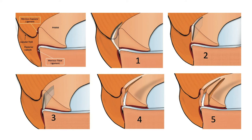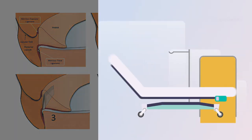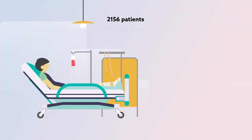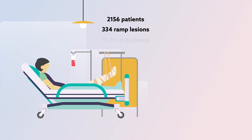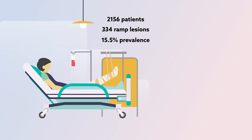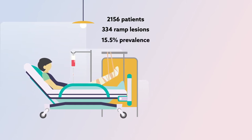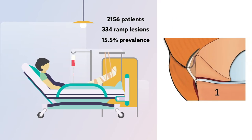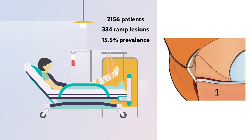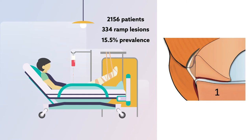Patients' demographic and clinical characteristics were then evaluated to determine whether they were correlated with a particular lesion subtype. Among the 2,156 patients evaluated, 334 ramp lesions were observed, resulting in a prevalence of 15.5%. By far the most common ramp lesion subtype was a complete tear in the meniscocapsular junction, representing almost 50% of all observed injuries.